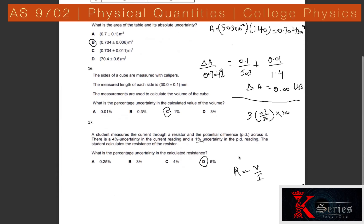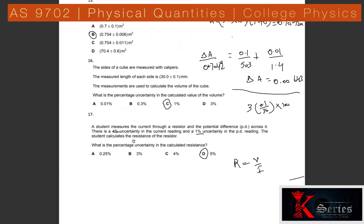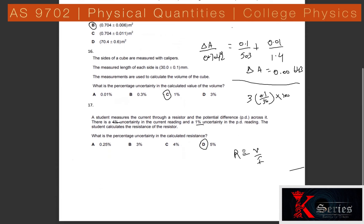Question 18: A student measures current through a resistor (4% uncertainty) and potential difference across it (1% uncertainty). Resistance R = V/I, and both V and I have power 1. Percentage uncertainty in R = 1×1% + 1×4% = 1 + 4 = 5%.